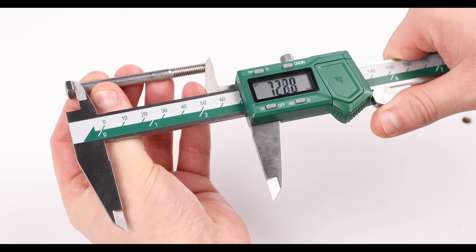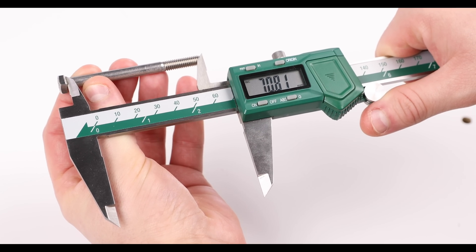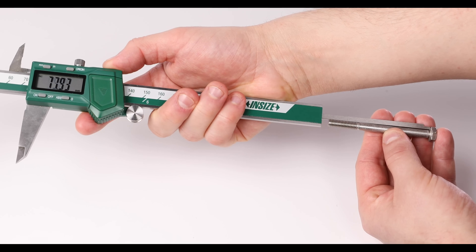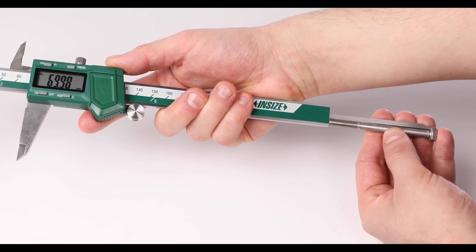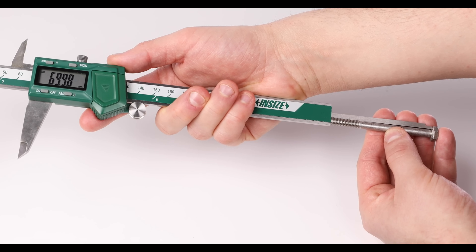Pro tip, whilst most people use the jaws of the vernier for all of these measurements, it's often more precise using the depth rod at the other end of the caliper as you have two flat points of contact against the screw which means greater accuracy.